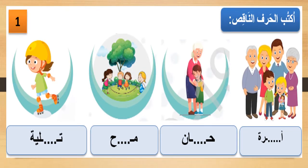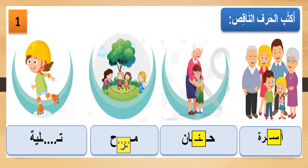أكتب الحرف الناقص - write the missing letter. Look at the picture and guess what is the missing letter. أسرة - الحرف الناقص: سين. حنان - الحرف الناقص: نون. مرح - الحرف الناقص: راء. تسلية - الحرف الناقص: سين.